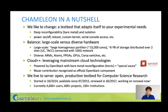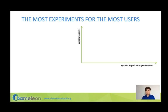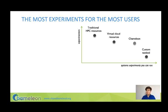Chameleon has been in existence for almost five years, during which time we supported over 4,000 users. How do you evaluate an experimental infrastructure? Our mission when we first started was to provide a platform for computer science research, which breaks down into two dimensions: supporting the broadest set of experiments you can, and supporting as many users as you can. If you think about traditional HPC resources, you can support some computer science experiments on them, but not many.